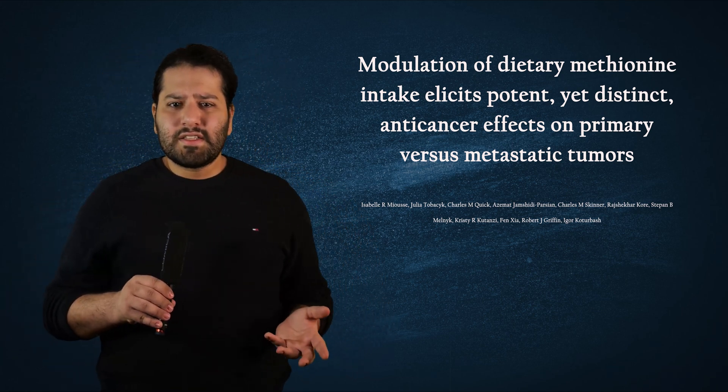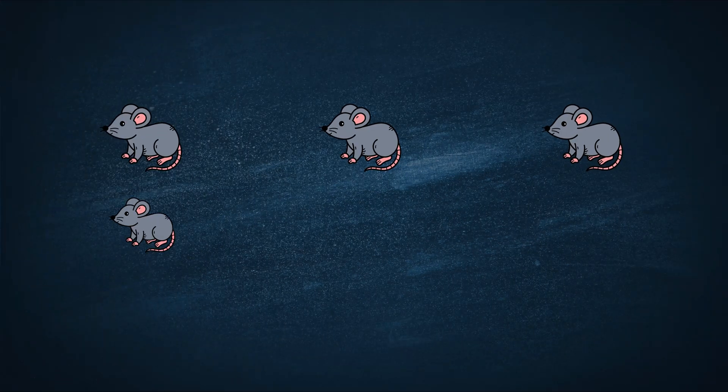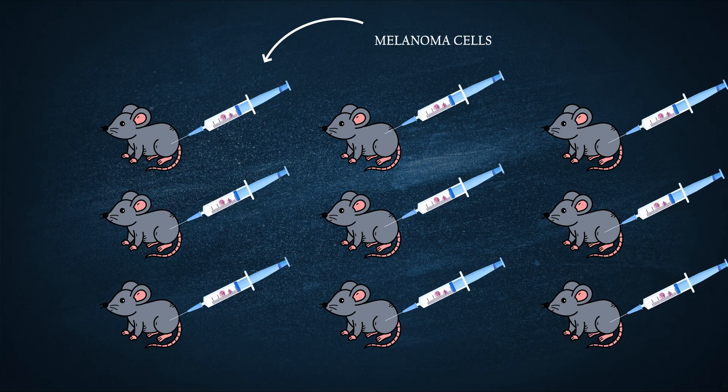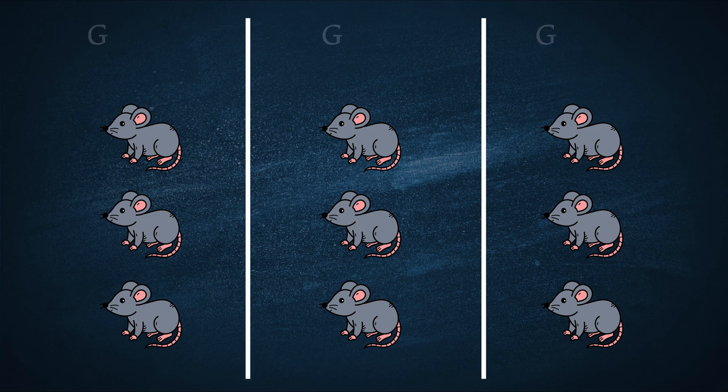In this study, the scientists investigated the effects of methionine restriction on cancer growth by injecting melanoma cells into mice and dividing the mice into three groups.